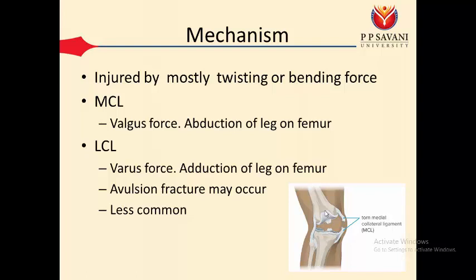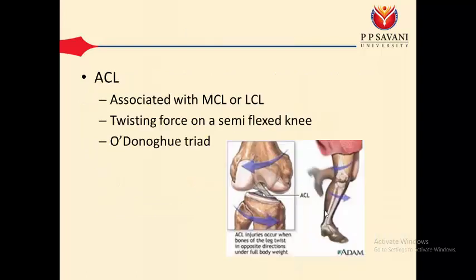Conversely, a varus force — where an object hits from the medial side of the knee, creating adduction of the leg on the femur — is very rare and can cause a lateral collateral ligament injury. In both types of ligament injury, an avulsion fracture may occur, where a chip of bone attached to the end of the ligament is ripped off, which is easily visible on X-ray.